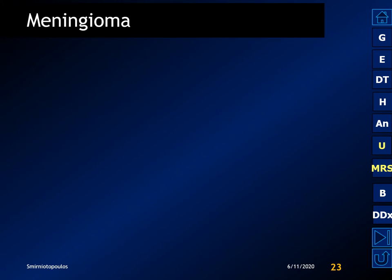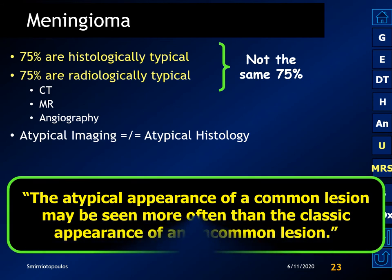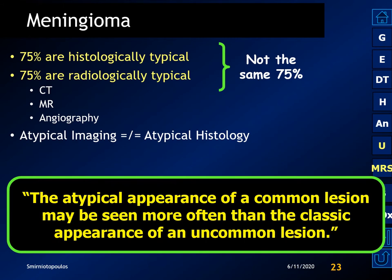About 75% of meningiomas are histologically typical. About 75% are radiologically typical on CT, MR, and angiography. But it's not the same 75% — atypical imaging does not equate with atypical histology. One of the cardinal principles is that the atypical appearance of a common lesion may be seen more often than the classic appearance of an uncommon lesion. Since meningiomas are so exceptionally common, it is very easy to see meningiomas that have an atypical imaging appearance.